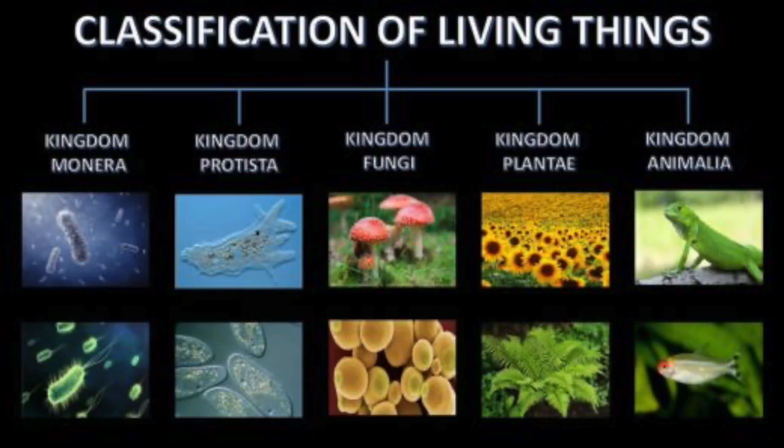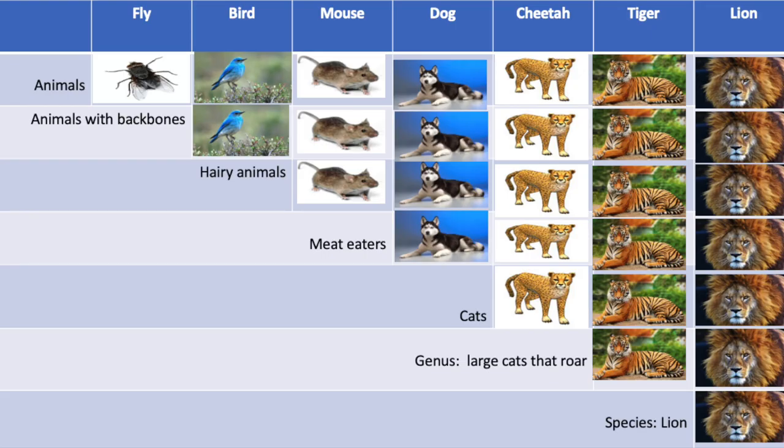Since a kingdom is a large group, scientists have to divide species into smaller groups. All organisms within each kingdom are similar to each other in some ways. However, kingdoms are so large that they include very different organisms. Scientists divide the organisms in a kingdom into smaller groups. The chart shows how one organism, the lion, is classified. Look at the first row in the chart — all the organisms pictured, including the lion, are animals.